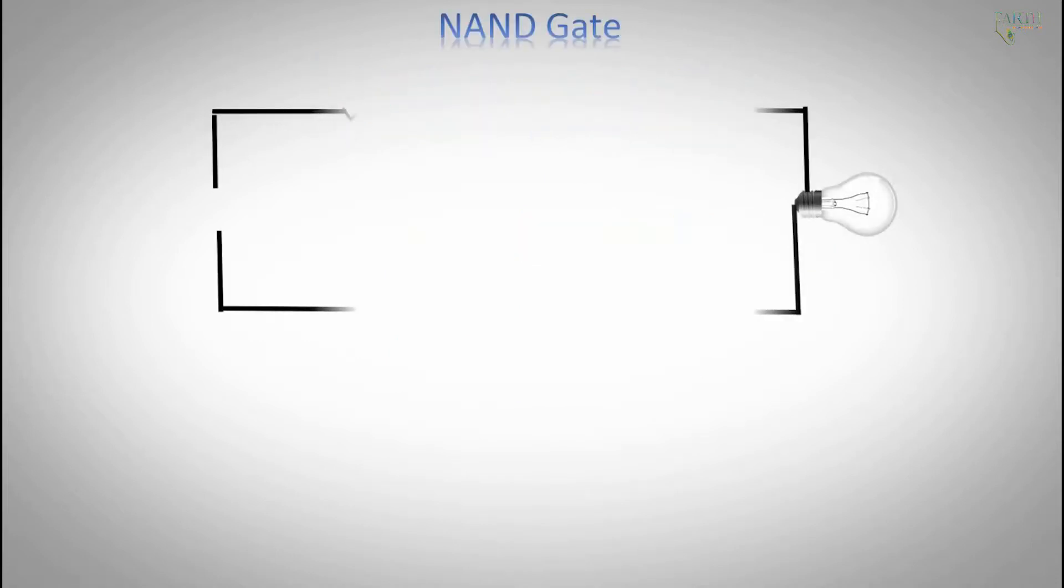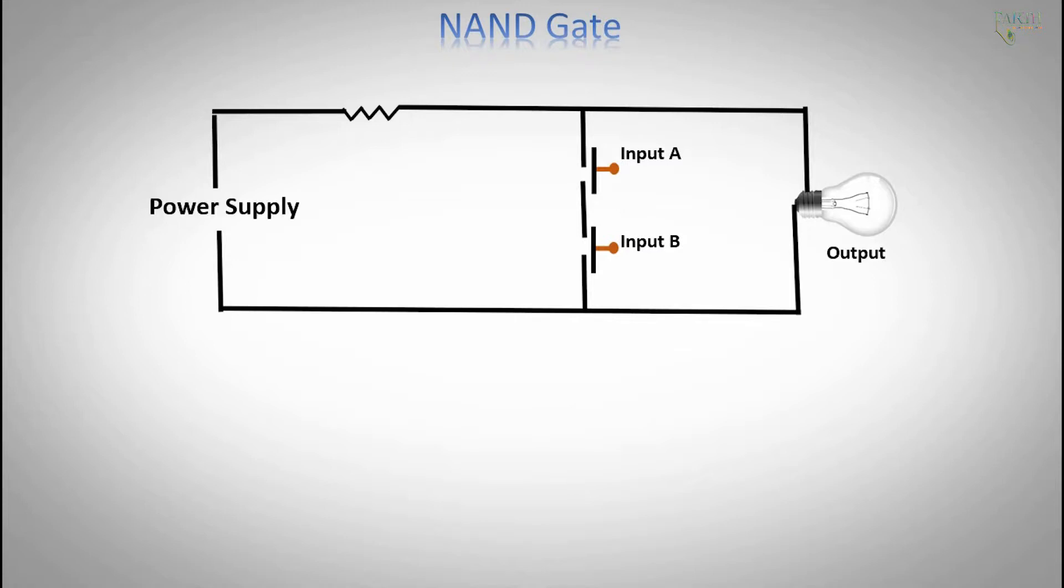NAND gate circuit diagram: Input A, Input B, Output, Power supply Positive and Negative, Resistor. NAND gate symbol.